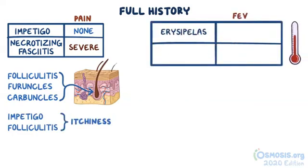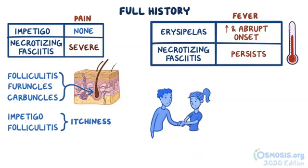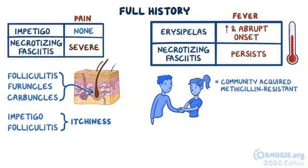In erysipelas the fever is high and abrupt in onset, and in necrotizing fasciitis the fever usually persists. Some individuals have had contact with other individuals with skin infections, and this is commonly the case with community-acquired methicillin-resistant S. aureus, which causes cellulitis and furuncles.